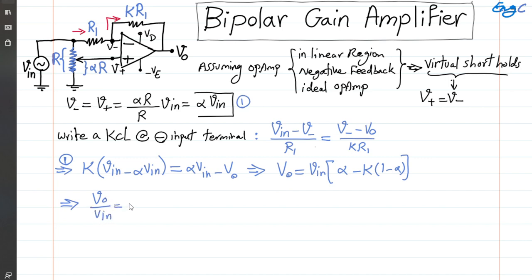The gain equals alpha(1 + K) - K. This shows how the analysis can be done.